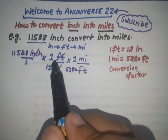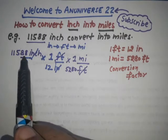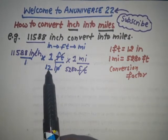Cancel out the common term, which is feet. Now we have 11,588 divided by 12 and 5,280.